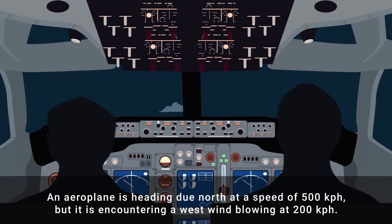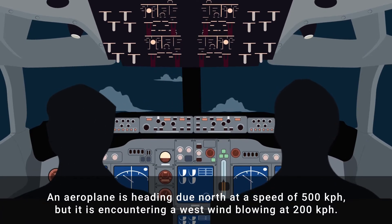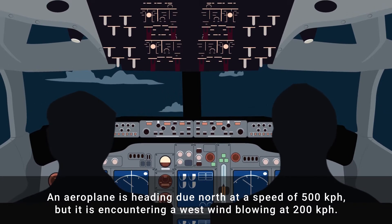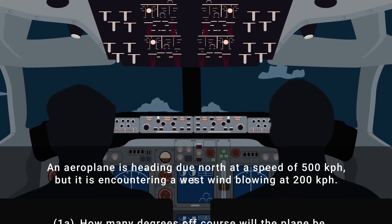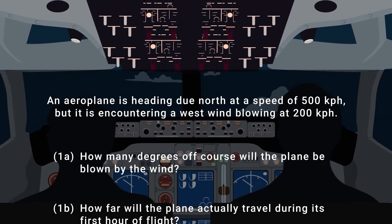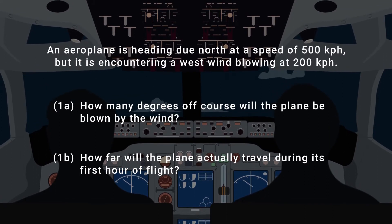An example trigonometry problem might be as follows. An aeroplane is heading due north at a speed of 500 km per hour, but it is encountering a west wind blowing at 200 kph. How many degrees off course will the plane be blown by the wind? And how far will the plane actually travel during its first hour of flight?